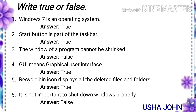Windows 7 is an operating system — true. Start button is part of the taskbar — true. The window of a program cannot be shrinked — false.